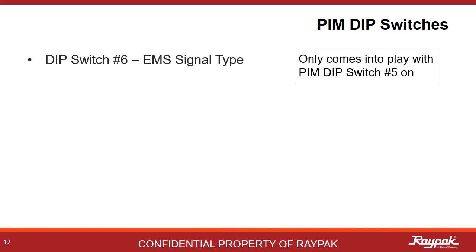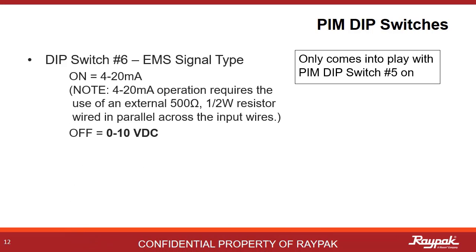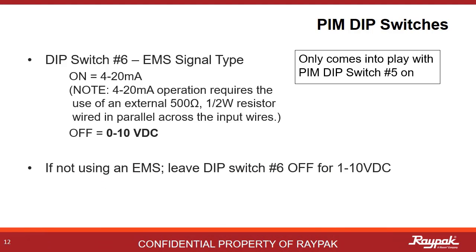Dip switch number six only comes into play when dip switch number five is on. Here is where you select what kind of signal type is needed. On indicates a 4 to 20 milliamp signal, while off indicates a 0 to 10 volt DC signal. If not using an energy management system, leave dip switch number six on the PIM off.